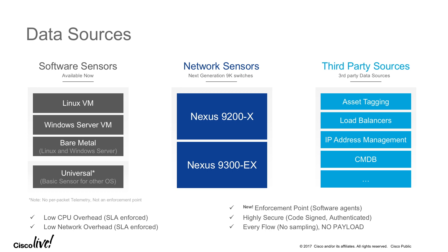We also have third-party data sources. We can bring in details from your IPAM to give more context around what a particular IP address is doing. We can bring in from CMDBs like ServiceNow, and also what we call asset tagging — allowing you to add customer-specific details about workloads running in your data center. For example, you can tag a workload as production or staging, and use that to generate scopes for filtering visibility to endpoints and for enforcing policy.